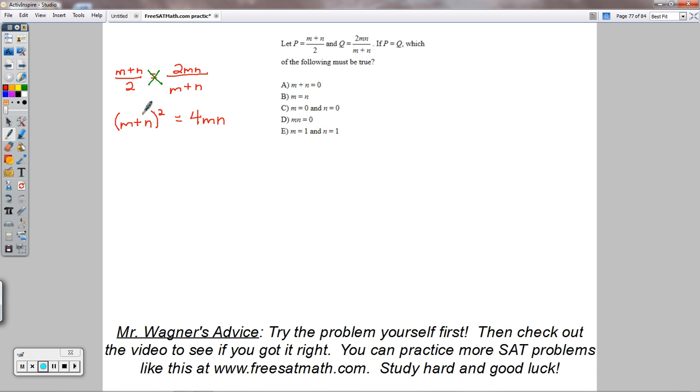If I foiled this out, I would eventually get M squared plus 2MN plus N squared. That would still equal 4MN.